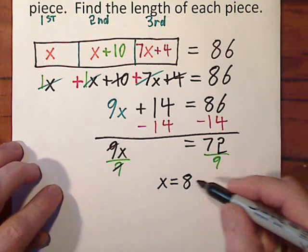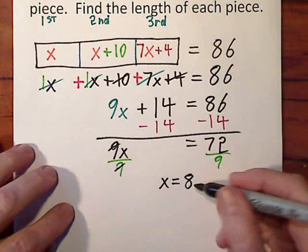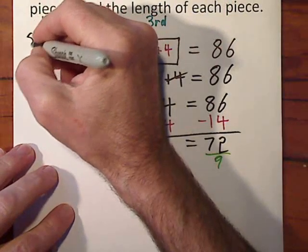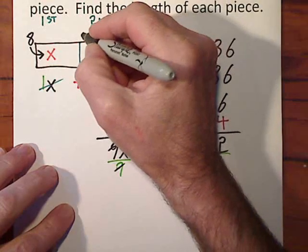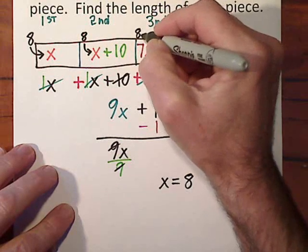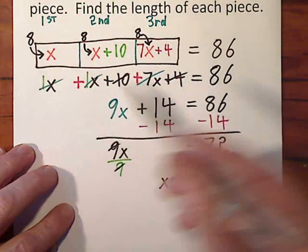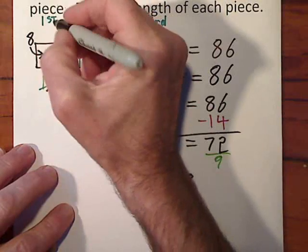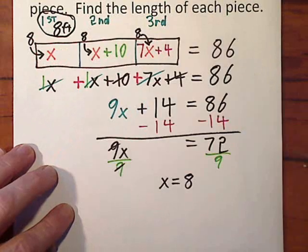We're actually in feet, but I'm not going to worry about my units right now. So you take this value, x equals 8. You plug it in wherever there's an x. So the 8 is going to go in here. The 8 is going to go in here. And the 8 is going to go in here. You got to plug it in for each piece and find out its length. Well, the first piece, you don't have to do any calculations. The first is 8 feet. So that's the length of our first piece.